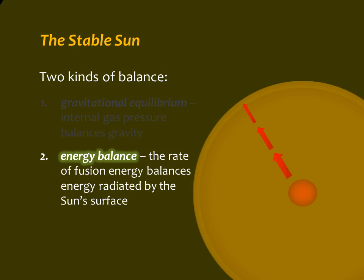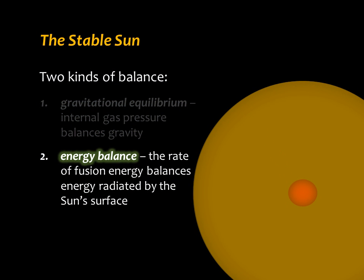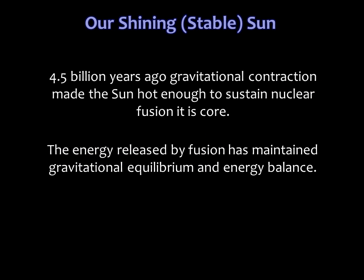If fusion in the core did not replace the energy that gets radiated away from the surface, gravitational contraction would cause the sun to shrink and its core temperature would rise rapidly. This doesn't happen. Although the temperature of the core does increase slowly over time, our sun is essentially a stable star.